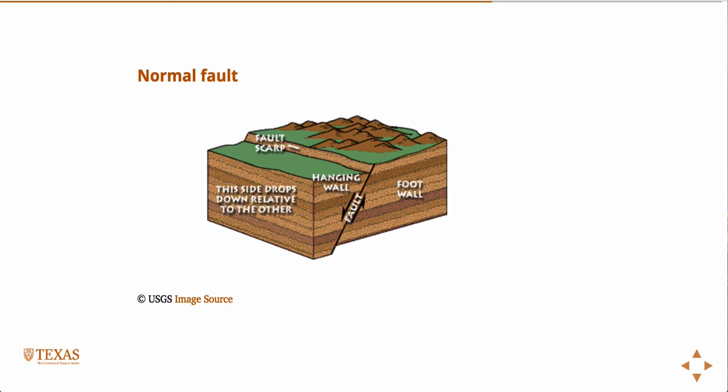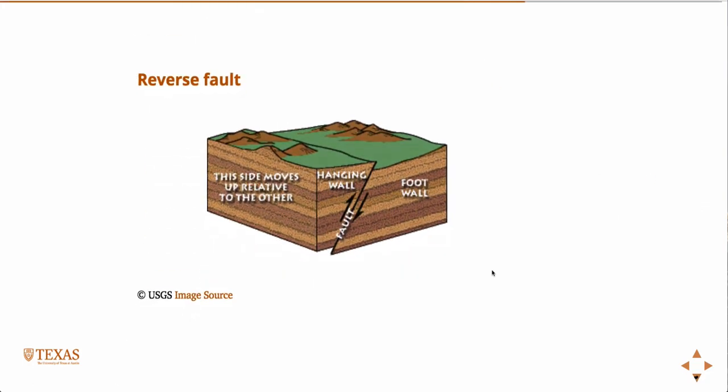So then the reverse fault, we're going to do the same thing, right? We're going to fix the foot wall, and then I'm going to apply gravity, but I'm going to apply gravity in the reverse direction. Which way is the hanging wall going to move? Again, in the direction of gravity, but now gravity has been reversed. So that's how I remember it, normal to gravity, reverse to gravity.